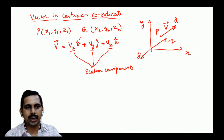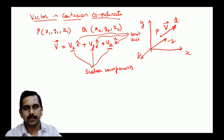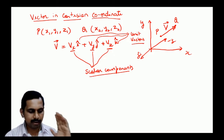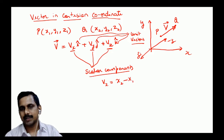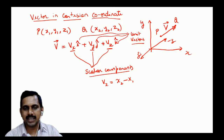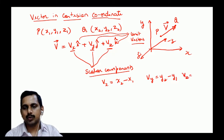Scalar components combined with unit vectors make a vector. vx equals x2 minus x1, vy equals y2 minus y1, and vz equals z2 minus z1. When we write dy/dx, it always means y2 minus y1 divided by x2 minus x1 — 'd' means final minus initial.